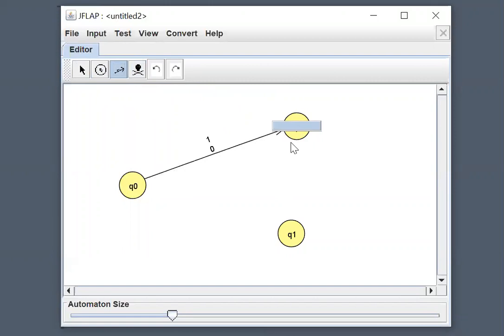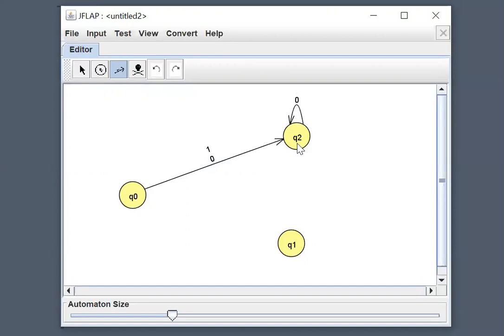Now let's create a couple more transitions. From q2 you want a self-loop, so you click using the transition arrow on q2 itself. Let's say I want 0 to go to itself. And then from q2 to q1, I want 1. And then maybe q1, let's say a 1. And then from q1 go back to q0 with 0 like this.